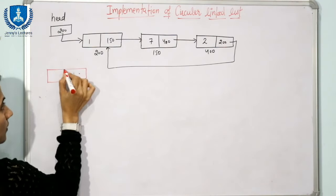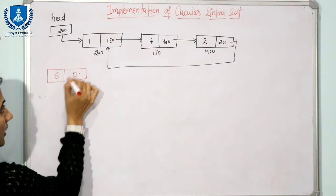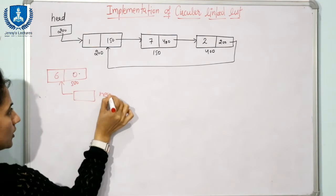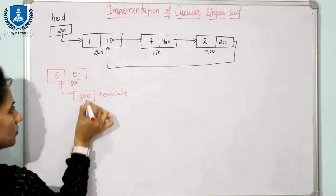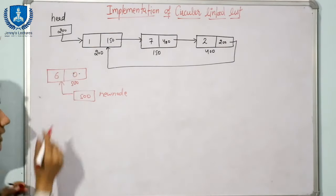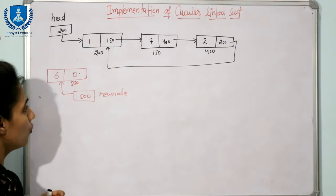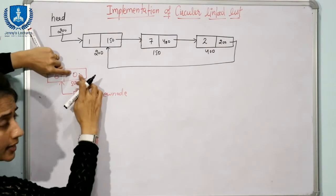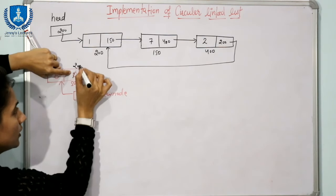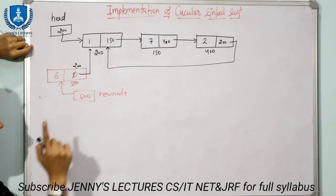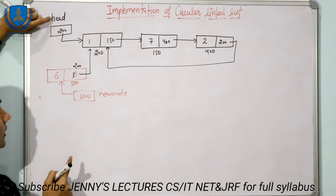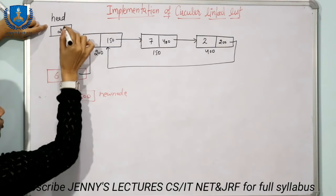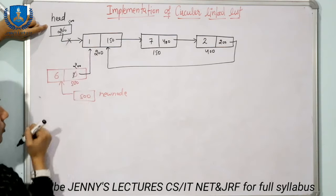Suppose I want to insert a node with data 6 and address 500. I create a new node pointer containing address 500. To insert it at the beginning, first you have to update this link — store address 200 so it points to the current first node. Second, update the head pointer: head will now contain address 500 because this is going to be the first node.